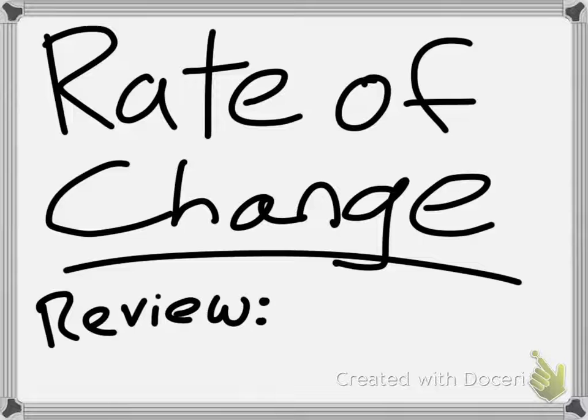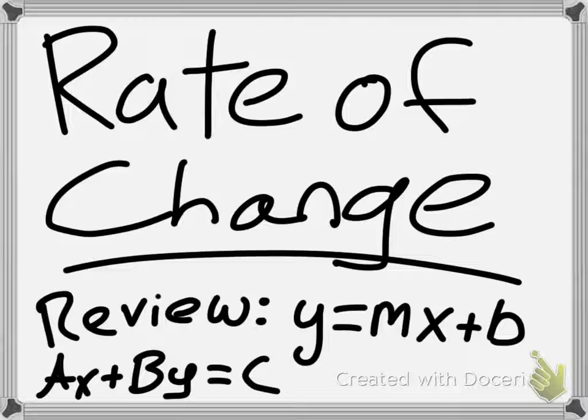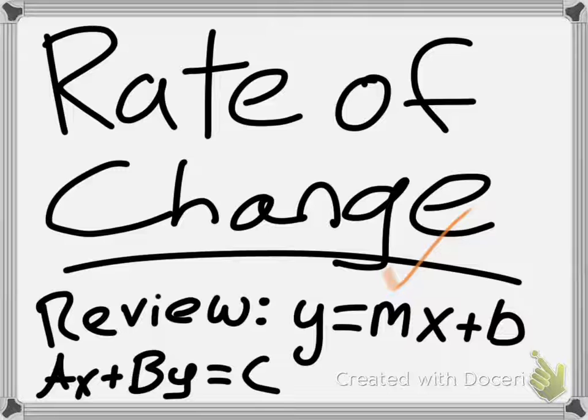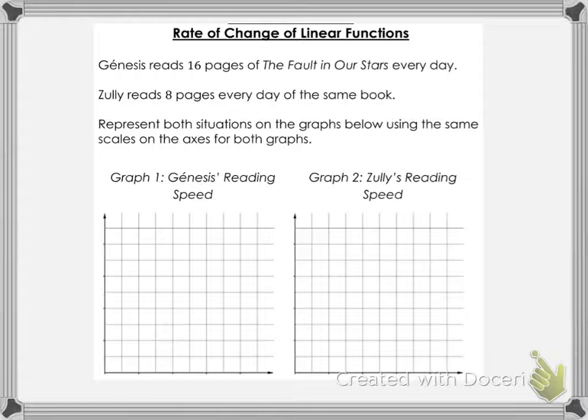Let's just get right into it — take notes however you want, or just re-watch the video later. A quick review of what we're going to be discussing: whenever you are dealing with the rate of change, you are dealing with lines graphed on a coordinate plane. That means slope-intercept form, y equals mx plus b, where m is the slope and b is the y-intercept. You are also possibly dealing with standard form, ax plus by equals c, where a and b are coefficients and c is a constant.